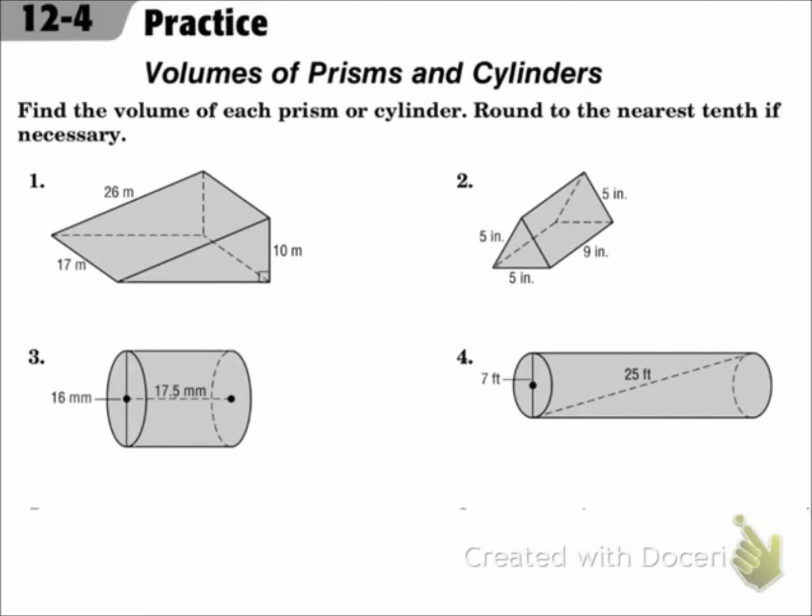This is Lesson 12.4, Volumes of Prisms and Cylinders. The objectives are to find the volumes of prisms and the volumes of cylinders. Find the volume of each prism or cylinder and round to the nearest tenth if necessary.